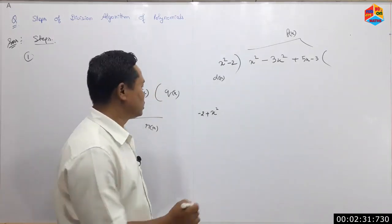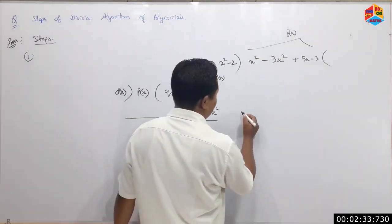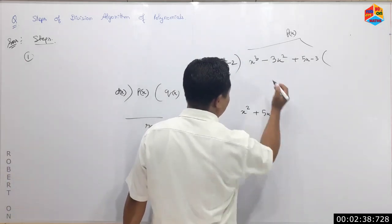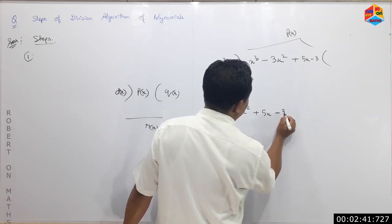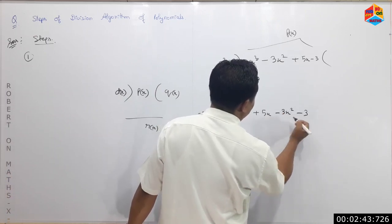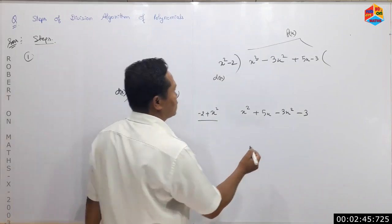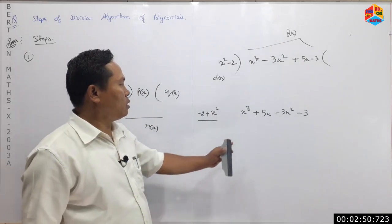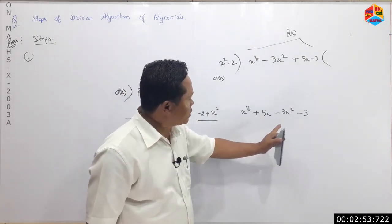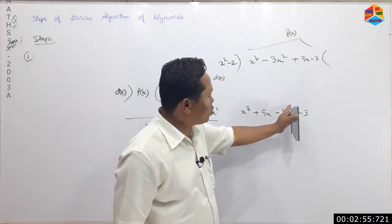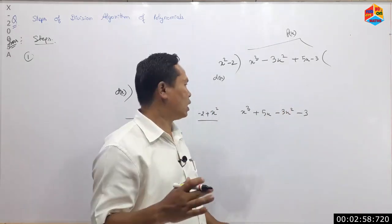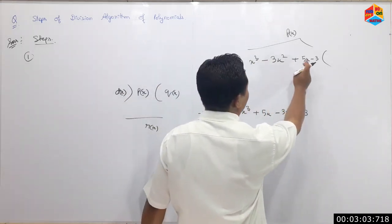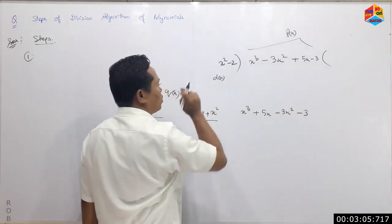We have to divide by minus two plus x. This is x squared plus five x. This is a cube term. This is minus 3x squared minus 3. We have to divide by x. This is x cubed. We divide by minus 3 plus 2 plus, and we can divide by minus 1 plus 2 plus 2 plus 3.